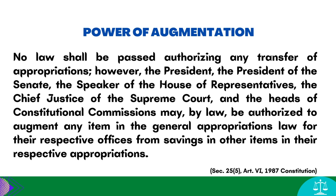The transfer of appropriated funds, to be valid under the Constitution, must satisfy three requisites: first, there is a law authorizing the President, the President of the Senate, the Speaker of the House of Representatives, the Chief Justice of the Supreme Court, and the heads of the Constitutional Commissions to transfer funds within their respective offices; second, the funds to be transferred are savings generated from the appropriations of their respective offices; and third, the purpose of the transfer is to augment an item in the general appropriations law for their respective offices.